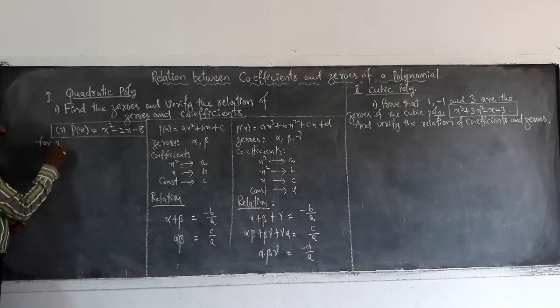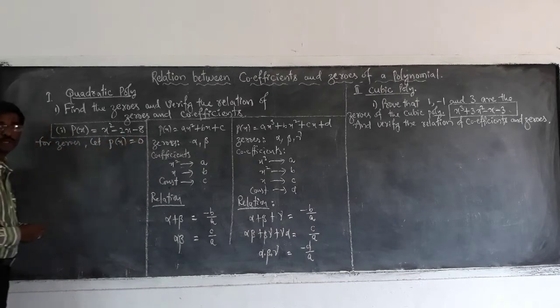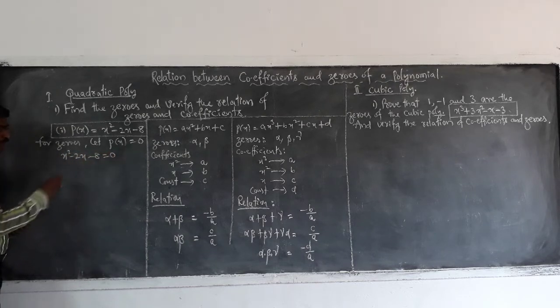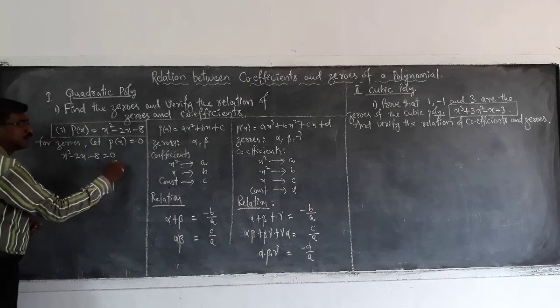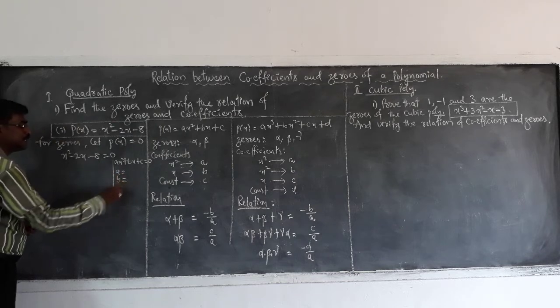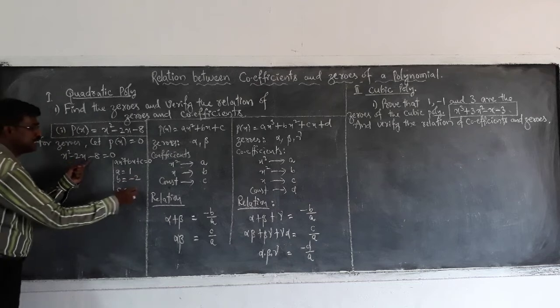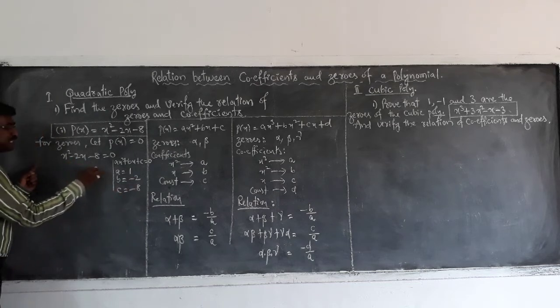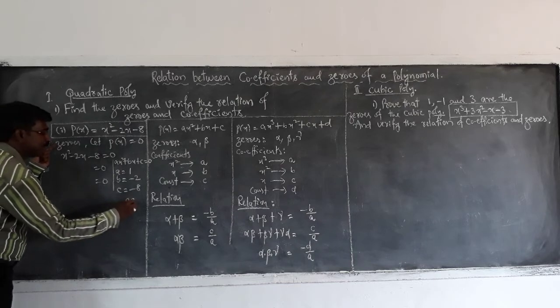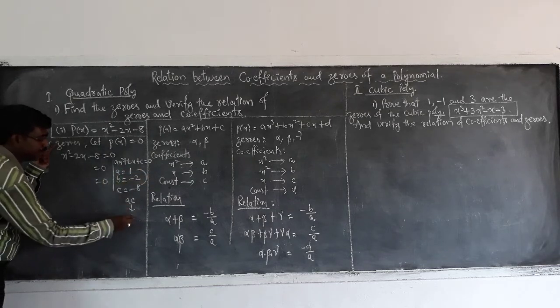So first for zeros of this polynomial let p equal to 0. Then x square minus 2x minus 8 equal to 0. So here according to comparing with ax square plus bx plus c equal to 0, here what are a, b, c? a is 1, b is minus 2 and c is minus 8. So now let us factorize this left side in order to find the zeros. So first calculate a into c. So a into c is 1 into minus 8. That is minus 8.